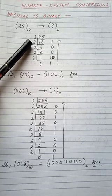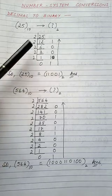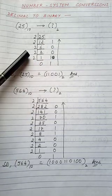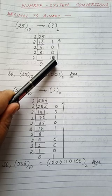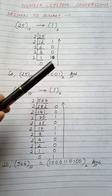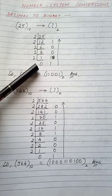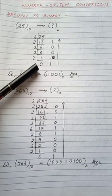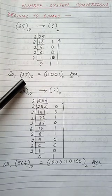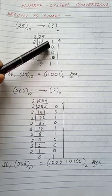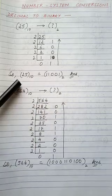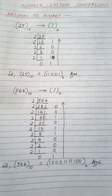Again divide 12 by 2 — we get the quotient 6 and the remainder is 0. Again divide by 2: quotient is 3, remainder is 0. Again divide by 2: quotient is 1, remainder is 1. Again divide 1 by 2: we get the quotient as 0 and the remainder is 1. Since the quotient is 0, we stop here. We draw an arrow from bottom to top through the remainder values, and this gives the equivalent of 25, that is 11001 — this is the binary value of 25 base 10.